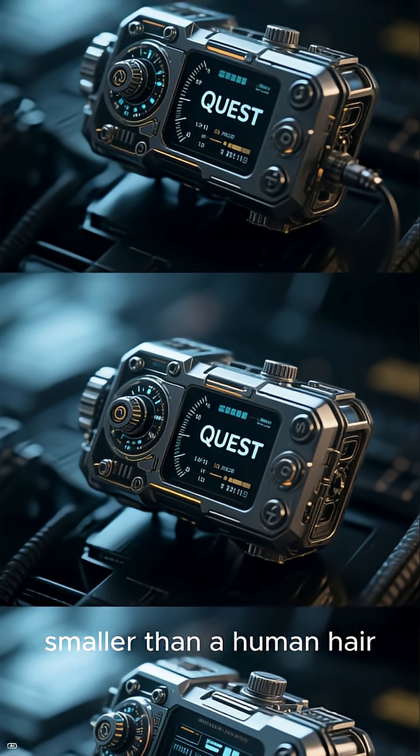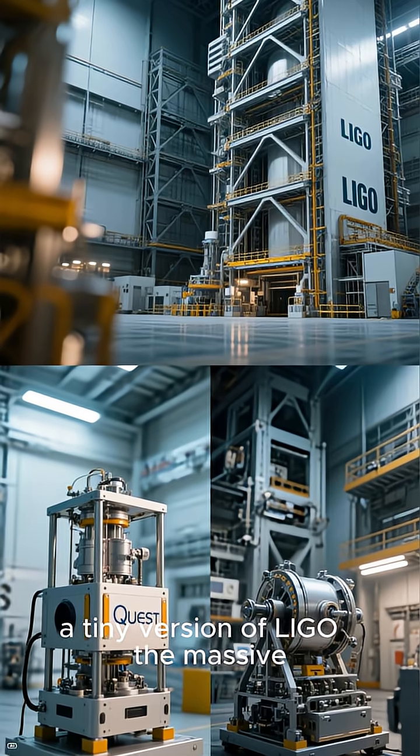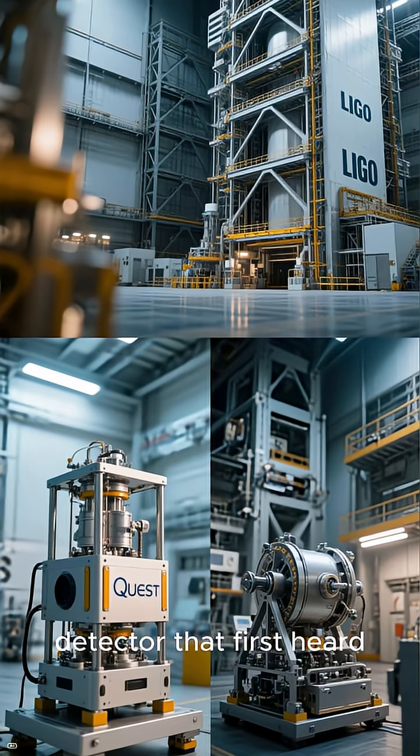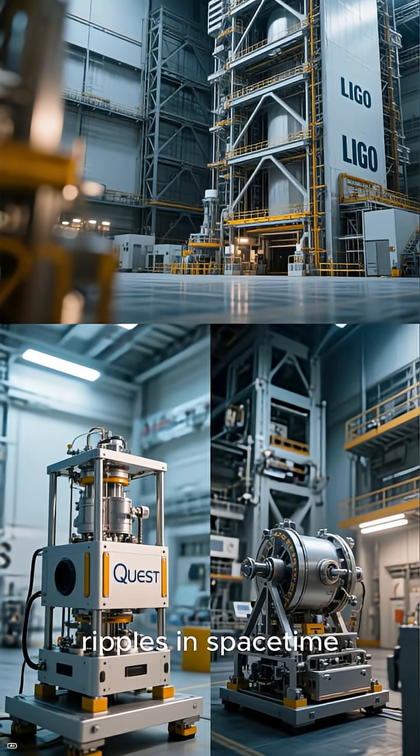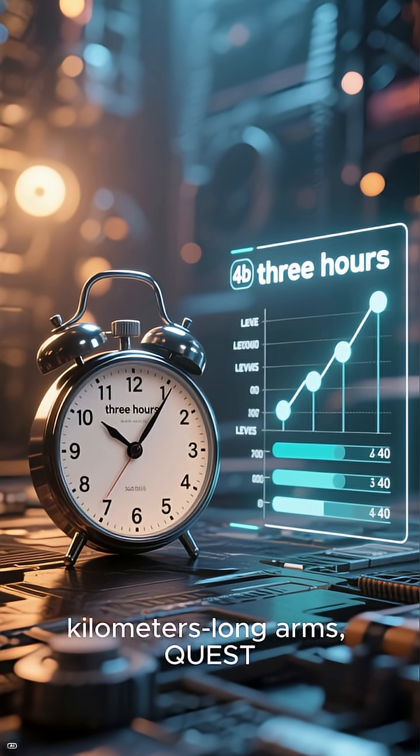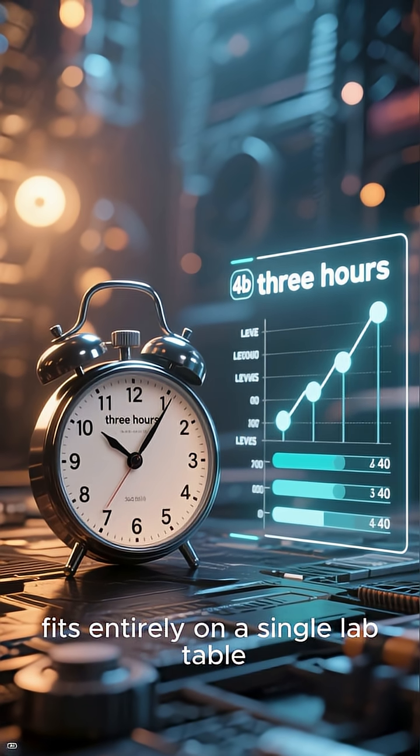This miniature setup is like a tiny version of LIGO, the massive gravitational wave detector that first heard ripples in space-time. But unlike LIGO's kilometer-long arms, QUEST fits entirely on a single lab table, and in just three hours it achieved record-breaking sensitivity.